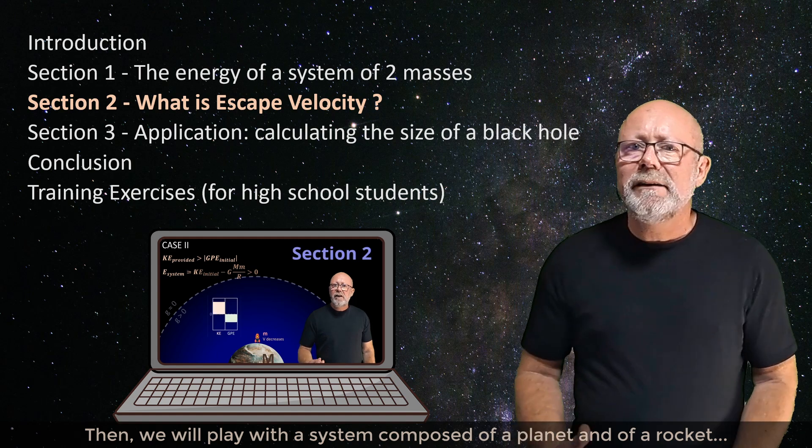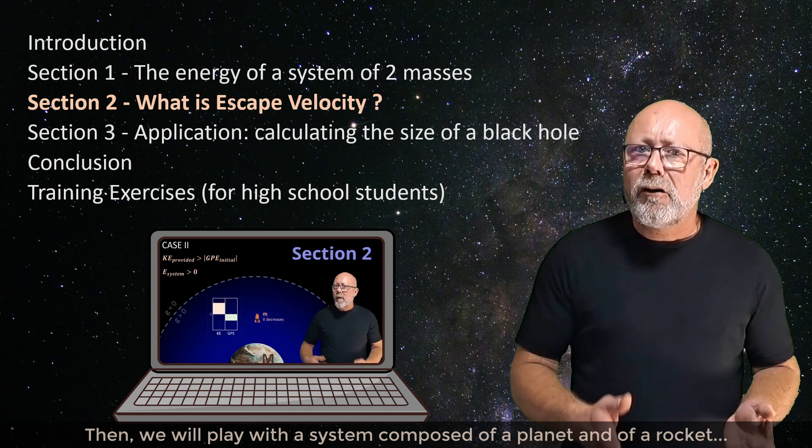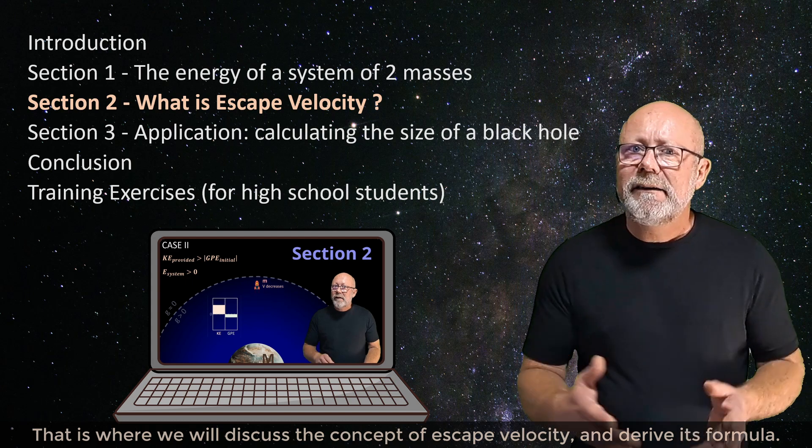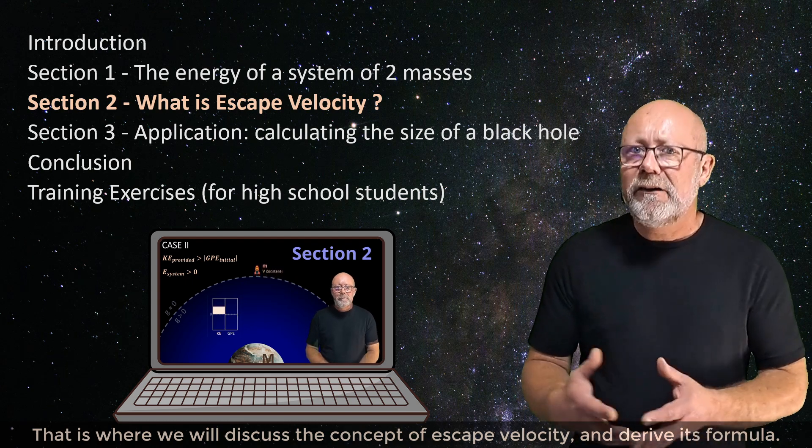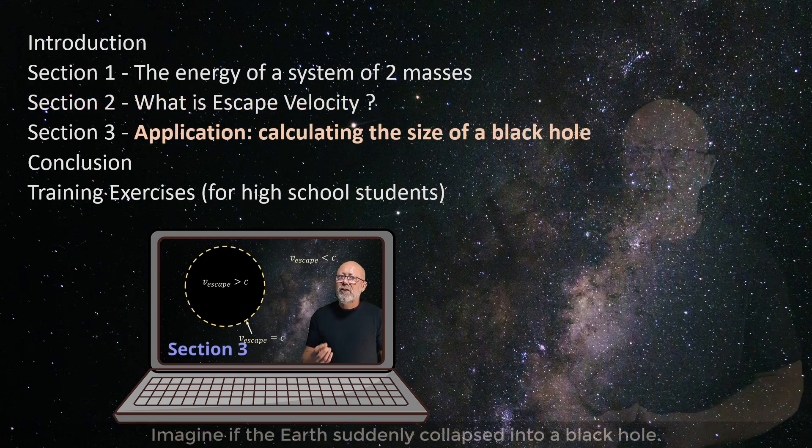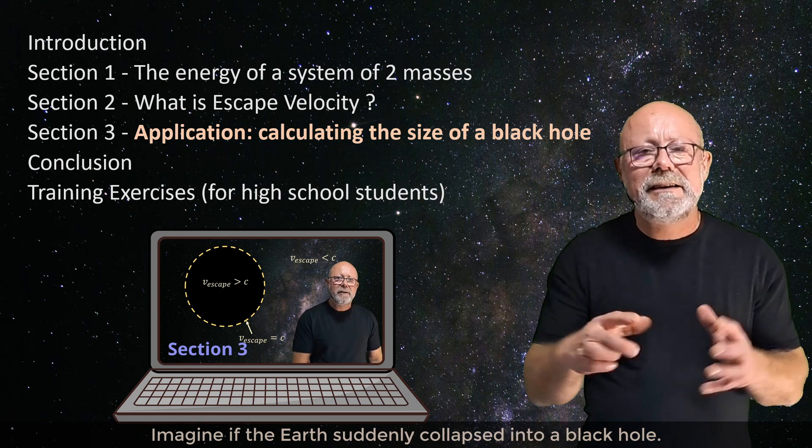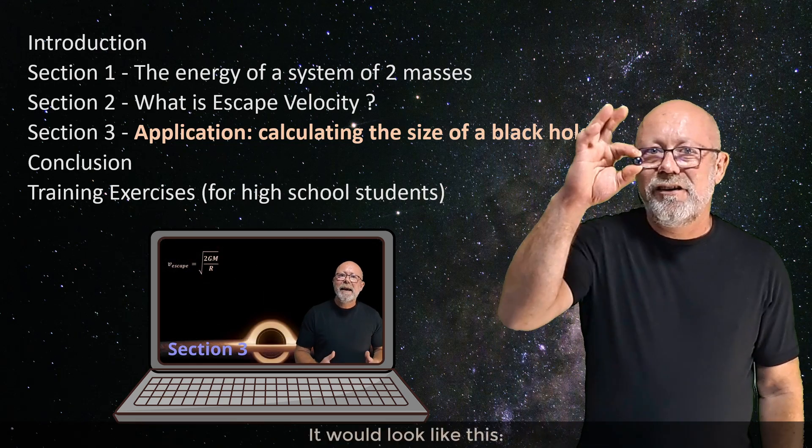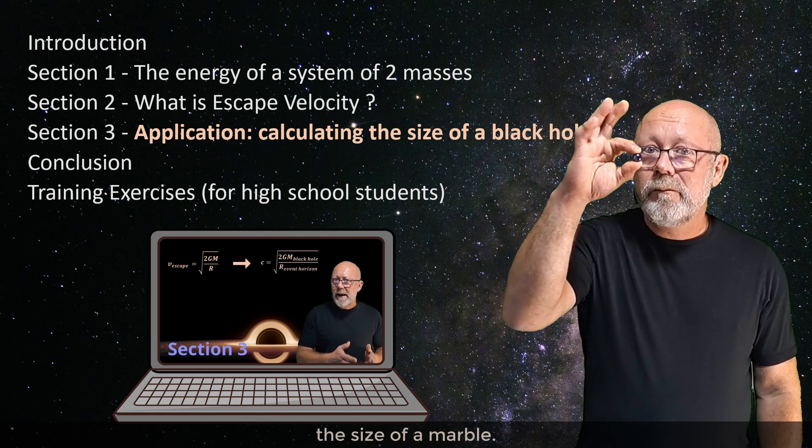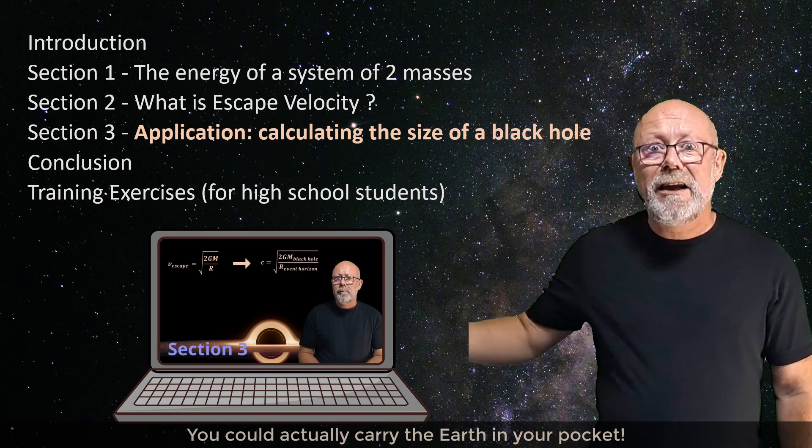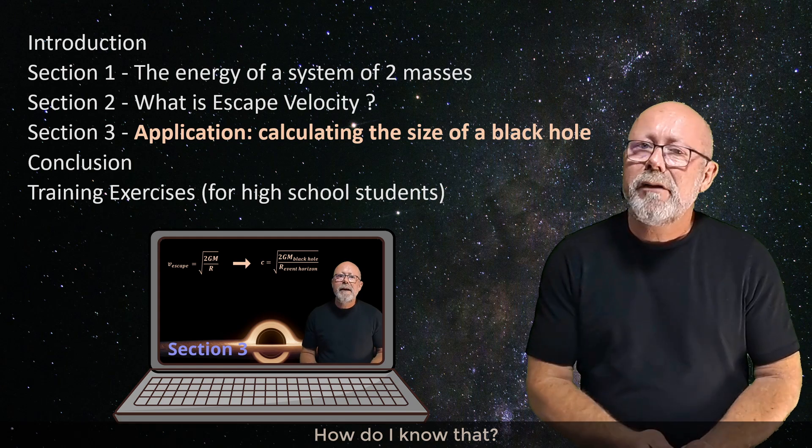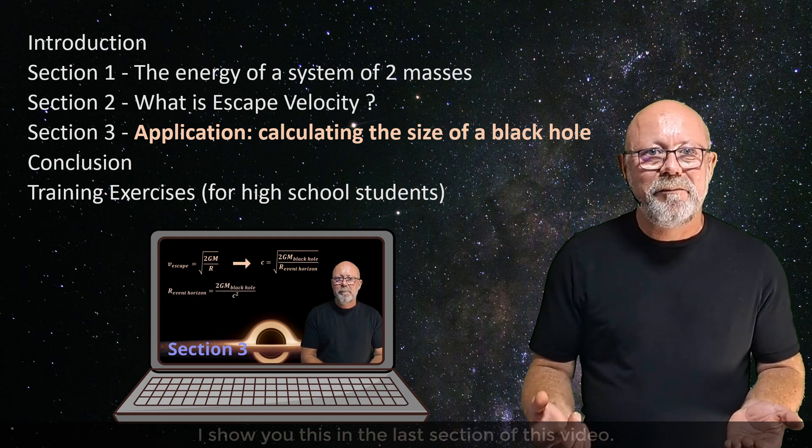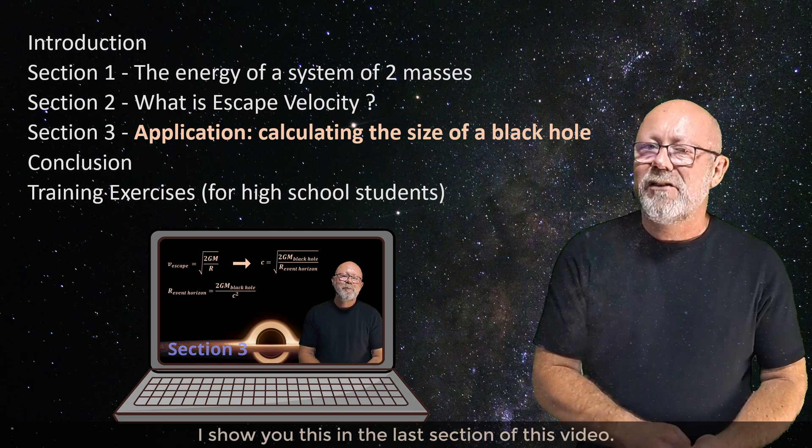Then we will play with a system composed of a planet and a rocket that's trying to leave the planet. That is where we will discuss the concept of escape velocity and derive its formula. Imagine the Earth suddenly collapses into a black hole. How big would it be? It would look like this, the size of a marble. You could actually carry the Earth in your pocket. How do I know that? Well, I use the formula for escape velocity. I'll show you this in the last section of this video.